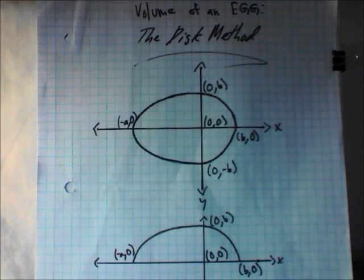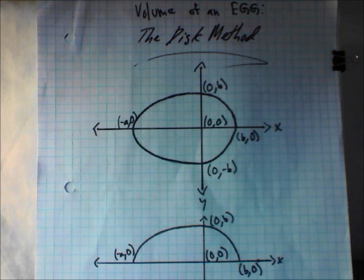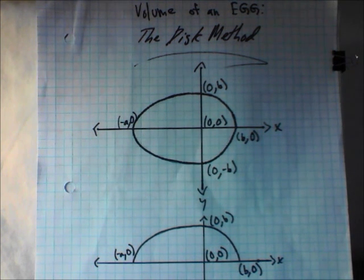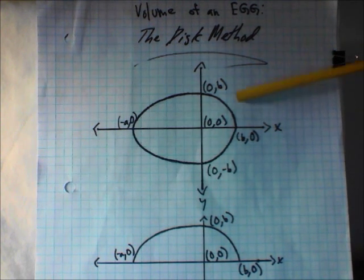What we're going to be doing today is finding the volume of an egg. The way we're going to go about doing that is to draw the shape of the egg on a piece of paper, as you can see here.